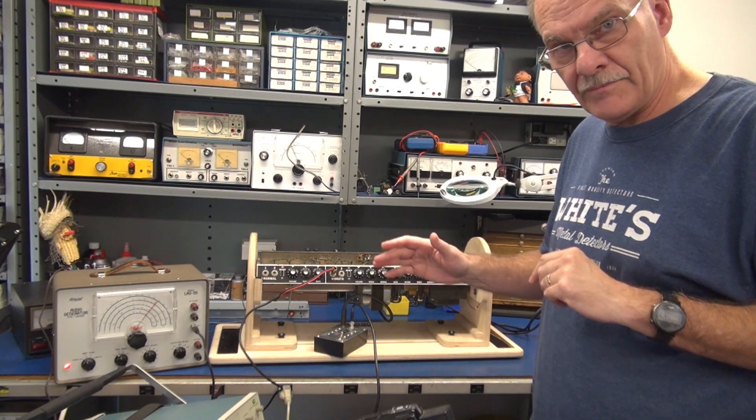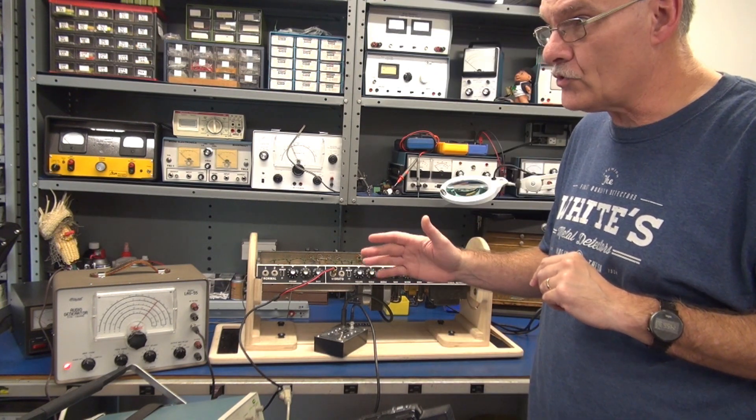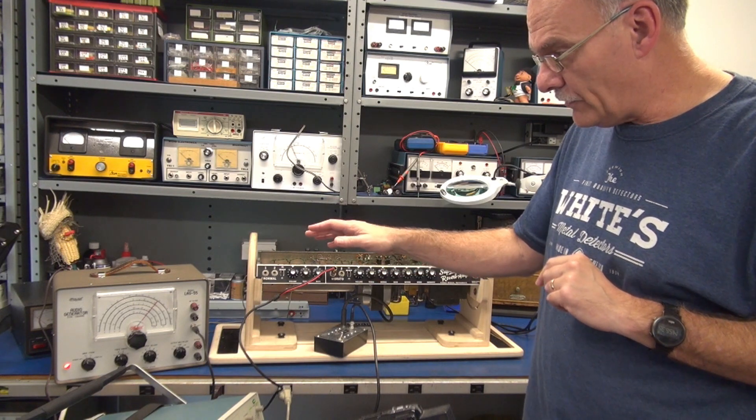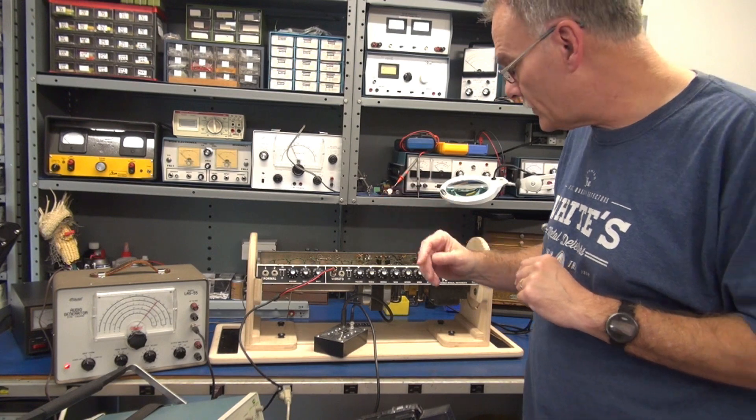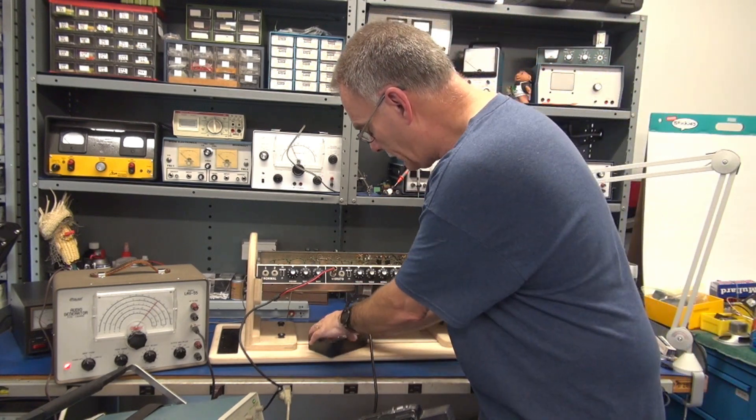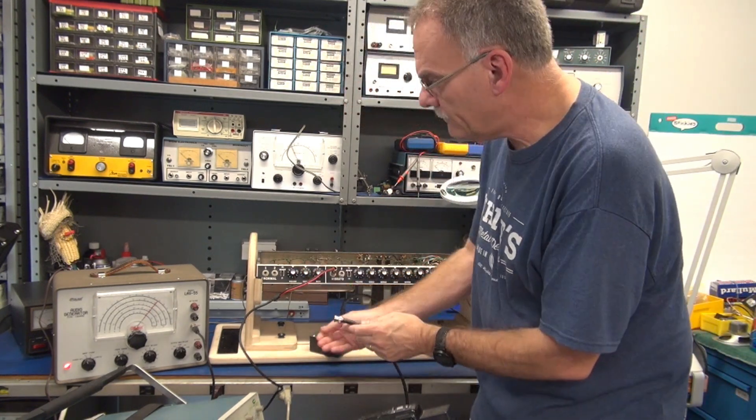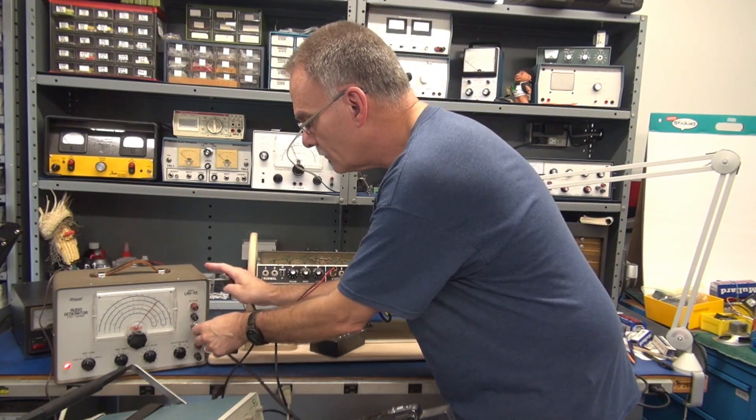So first thing we're going to do is set up the input from the audio generator. The audio generator is going to be set for one kilohertz at 150 millivolts output. So if I take my scope lead, plug it in to the generator.